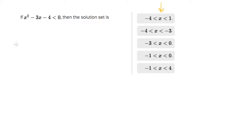First of all, if you have a quadratic, the first thing you need to do is factor it. This quadratic factors into X plus 1 times X minus 4 equals 0, or rather X plus 1 times X minus 4 is less than 0. So that's the factored version of this inequality.